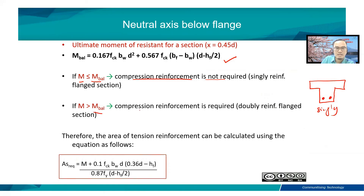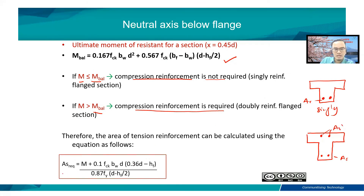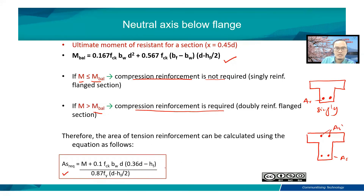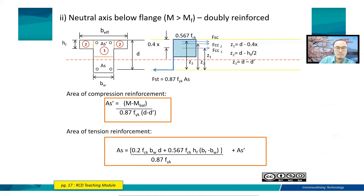If M is greater than M_balance, compression reinforcement is required within the flange beam. We need both A_S and A_S'. For singly reinforced flange sections, we use these equations to determine the area of steel in tension. For the compression reinforcement A_S', we use this equation. For doubly reinforced flange sections, we have F_ST equal to F_CC1 plus F_CC2 plus F_SC, where F_SC is the force in the compression steel.